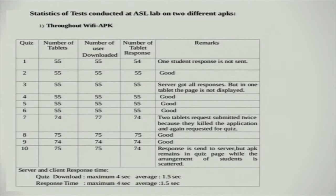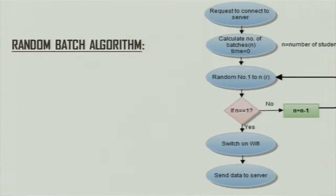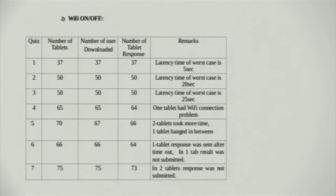Next are the statistics. We conducted some experiments and got almost 100% results. We installed two types of APK: one that keeps Wi-Fi on throughout and one that automatically switches Wi-Fi on and off — switching on only when communication between server and client is required. These were the two applications, and the statistics showed near 100% success. What we learned from this project includes Android development, REST technology, JSP, and the algorithms we developed. I would like to hand over the rest of the presentation to my friend Ajita.